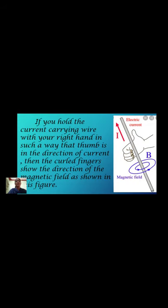If you hold the current carrying wire with your right hand in such a way that the thumb is in the direction of current, then the curved fingers show the direction of the magnetic field as shown in this figure.